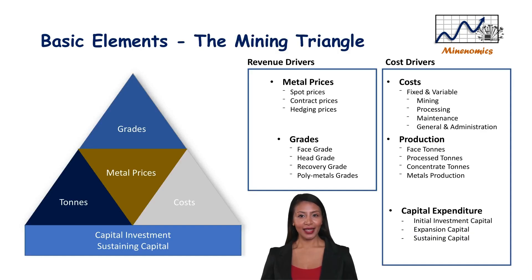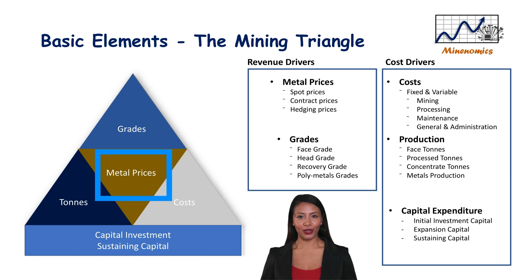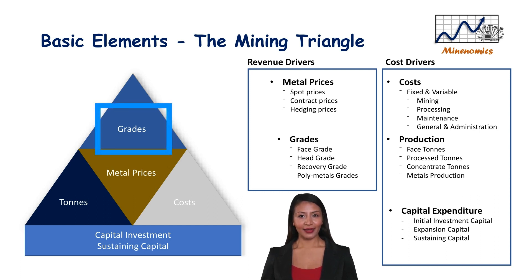The basic elements related to mining cash flows are neatly summarized by the mining triangle. The first element is the metal price or prices — the single most impactful variable on net present value. The price assumptions adopted are key to mine optimization, and we will spend some time in a later video discussing this important topic. The second is grade. There are various grades that need to be understood because metal grades have an equally impactful result on the net present value calculation.